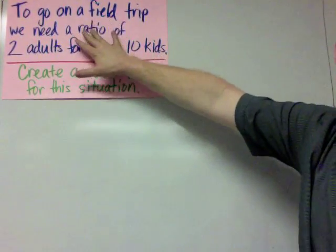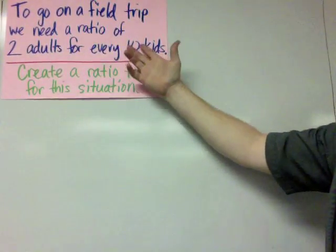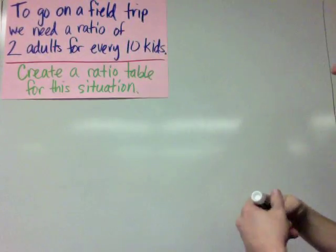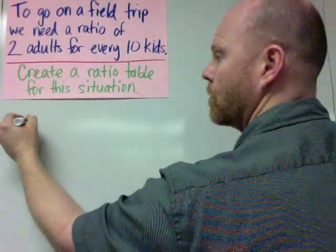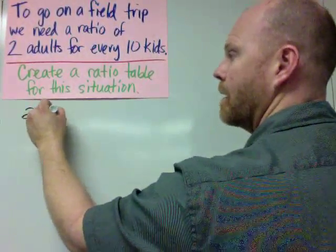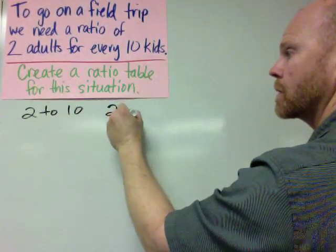If we have the story to go on a field trip, we need a ratio of 2 adults for every 10 kids. Well, the ratio might look like 2 to 10, or the ratio in this story might be 2 to 10.